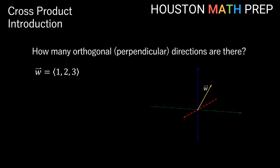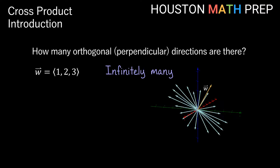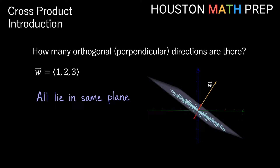Now let's think about how many orthogonal directions there are to our vector w — orthogonal just being the vector word for perpendicular. It turns out there are infinitely many directions orthogonal to w. These vectors all lie in the same plane — it's the plane that vector w is sticking out of at a 90-degree angle. Any vector lying completely in that plane will be orthogonal to w.